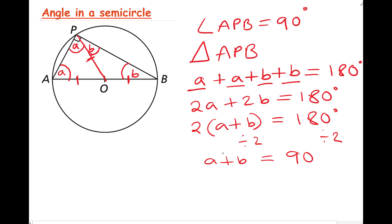So we can say that A + B equals 90 degrees. So these two angles here added together equals 90 degrees. So we have proved that angle APB is 90 degrees. Therefore, the angle subtended at the circumference by a semicircle is a right angle.